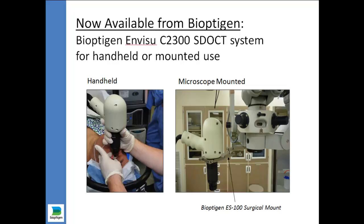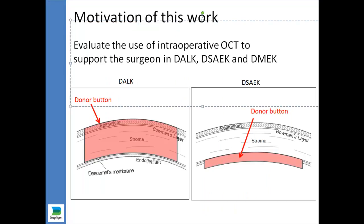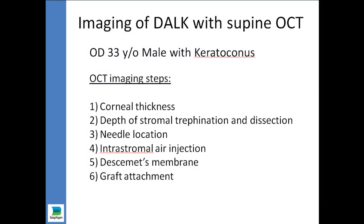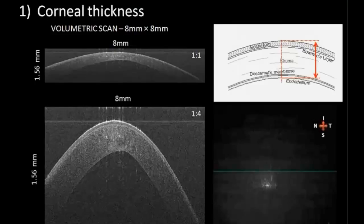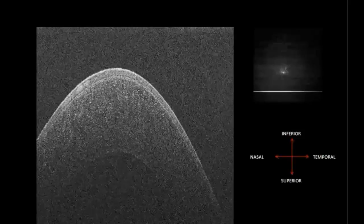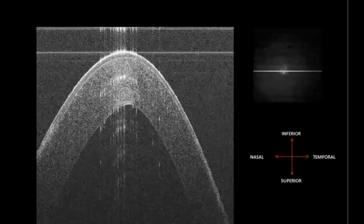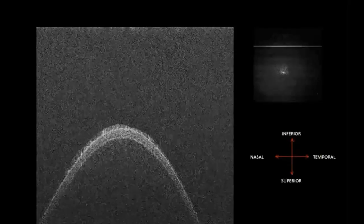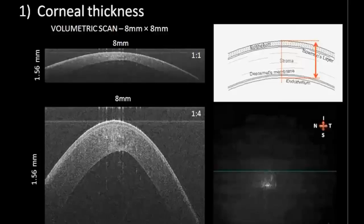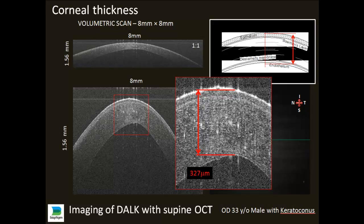I first became interested in anterior segment OCT imaging because of the types of corneal surgery that I perform. This is the first case, a 33-year-old male with keratoconus, and we were able to image many of the steps of the surgery to help us understand what exactly is going on and how we can improve this procedure. This is a preoperative scan of a patient with keratoconus, and here you can see that we can get volumetric data as well, with really quick acquisition time and non-contact imaging. We can magnify any one of these cuts and see the corneal thickness, and identify what part of the cornea is the thinnest and where.